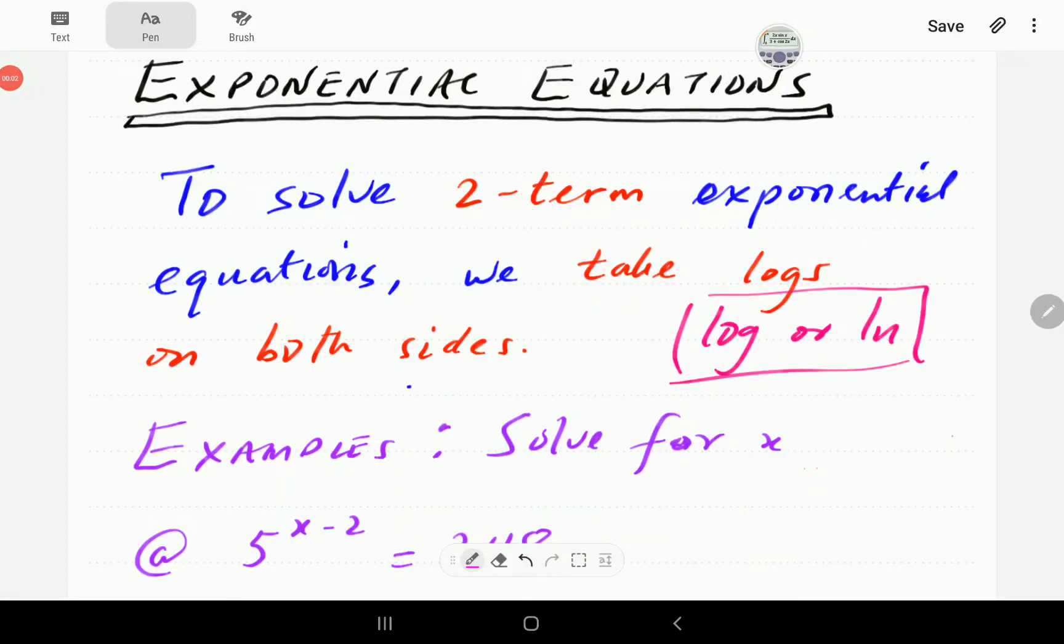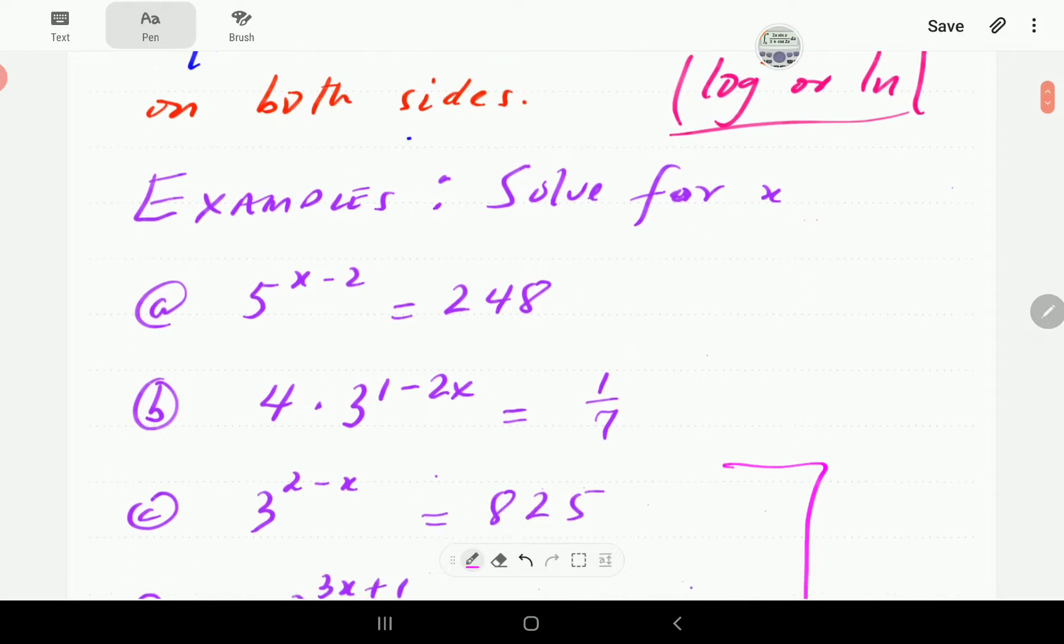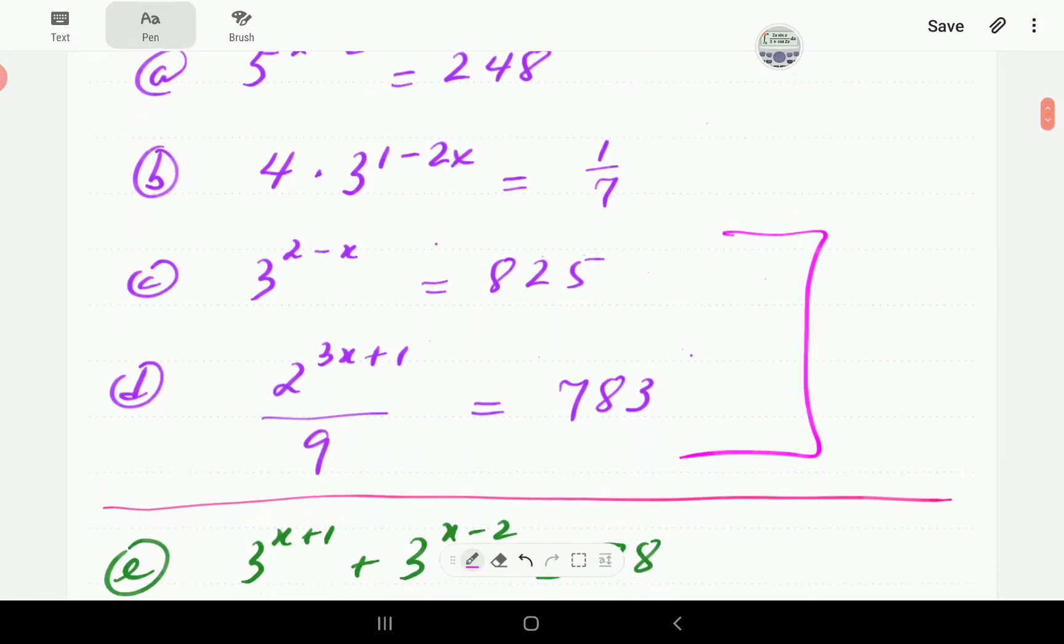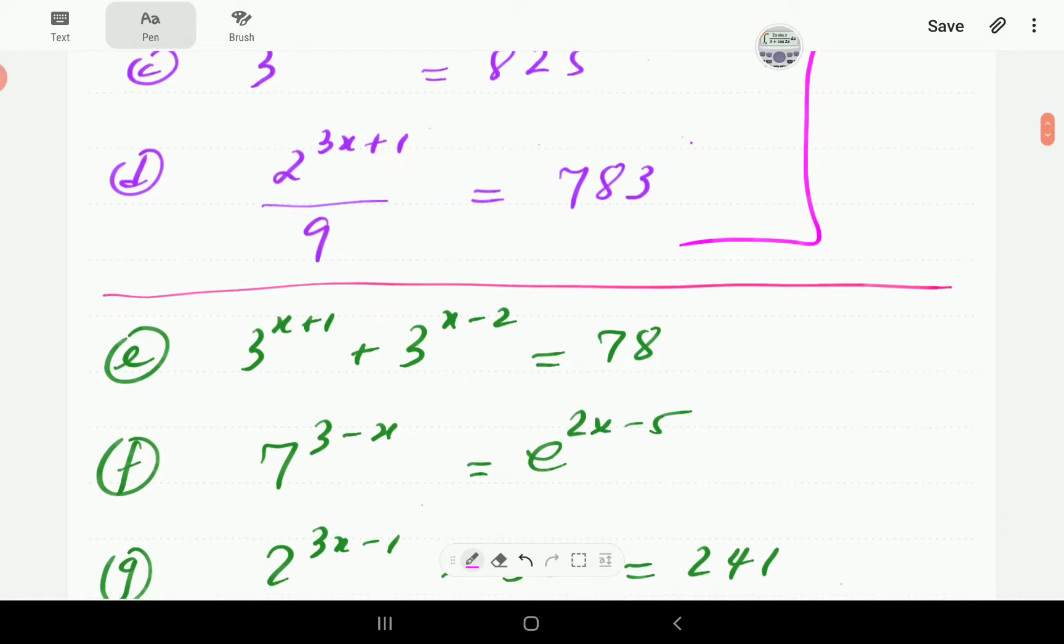All right, this is part two of a series of videos where we're showing how to solve exponential equations. In part one, we said if our equation has got two terms, we simply take logs on both sides. We want to extend this slightly here by saying even if the equation can be reduced to two terms. There are equations that are not like two terms at face value, but you can reduce them to two terms.